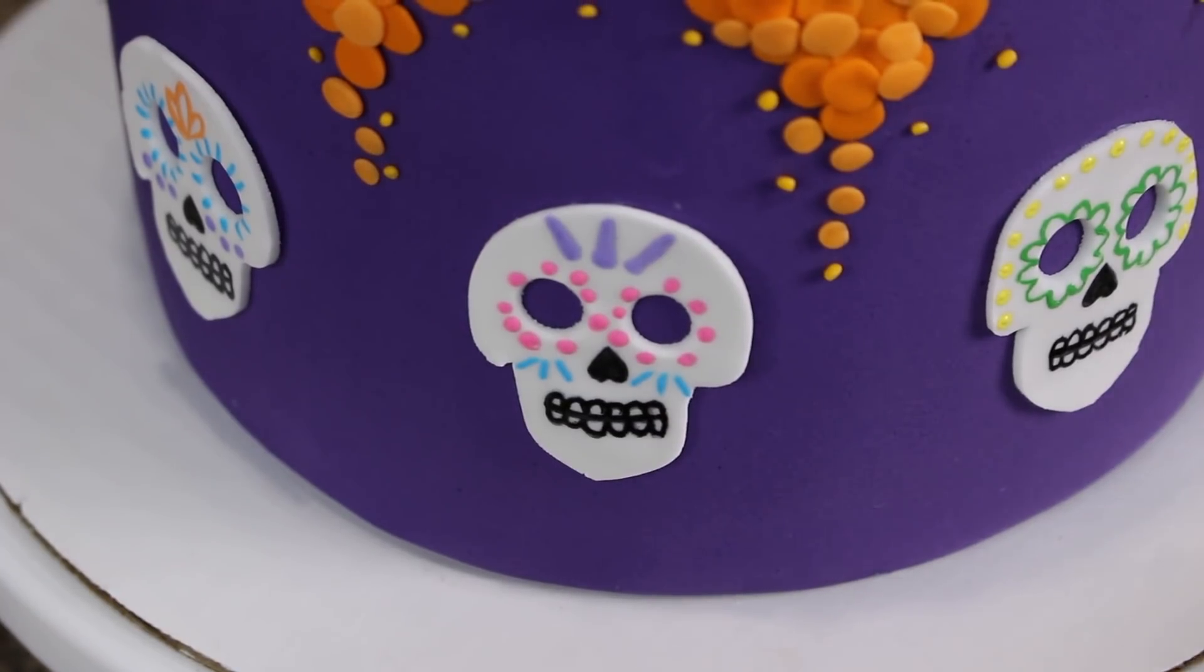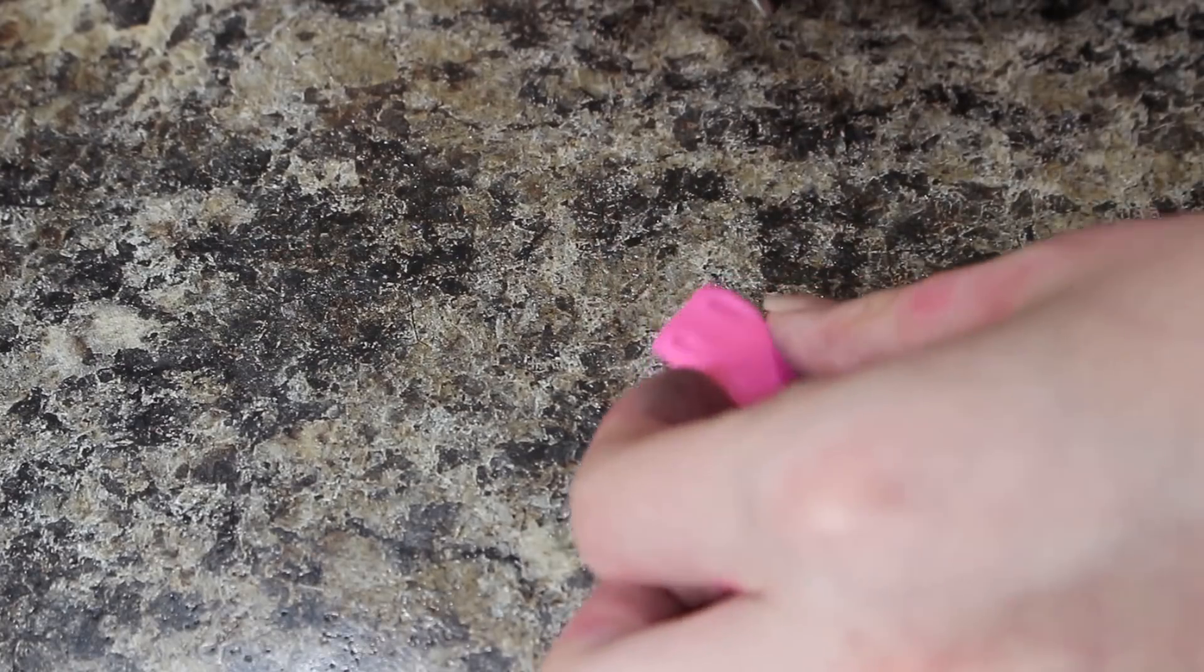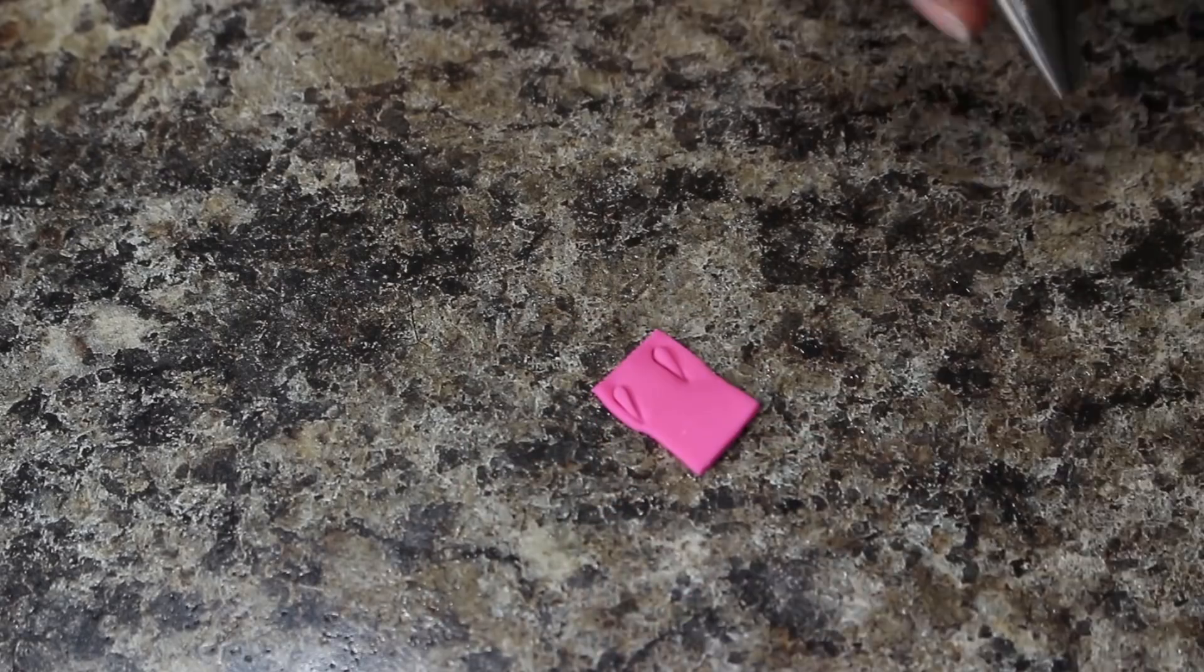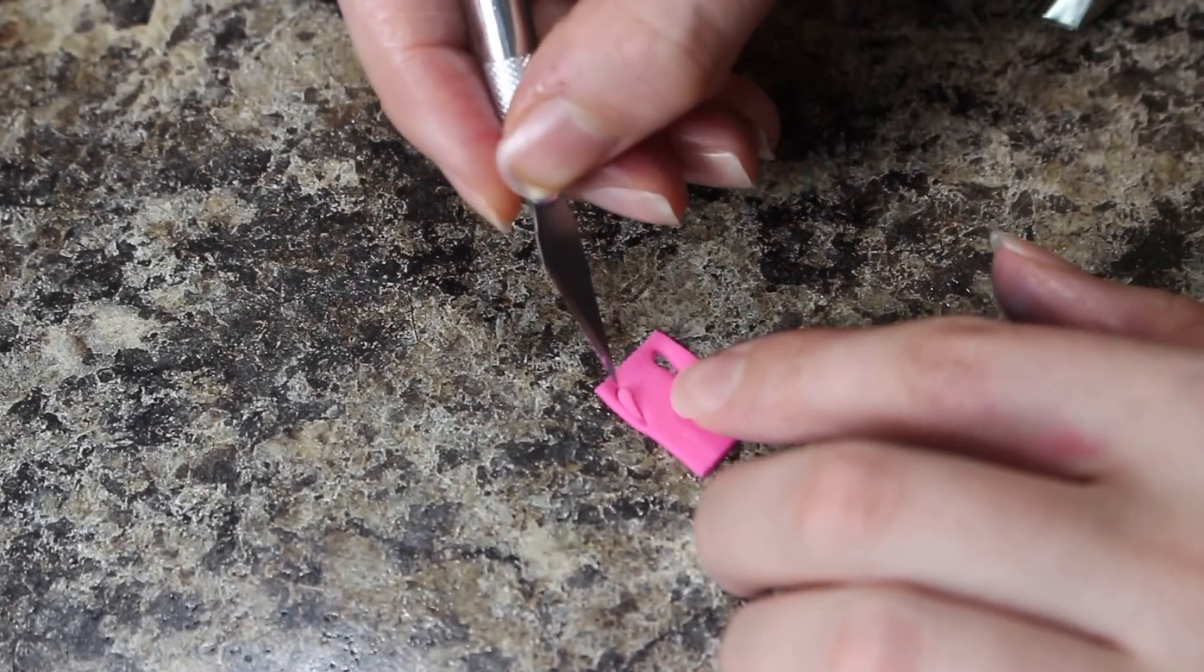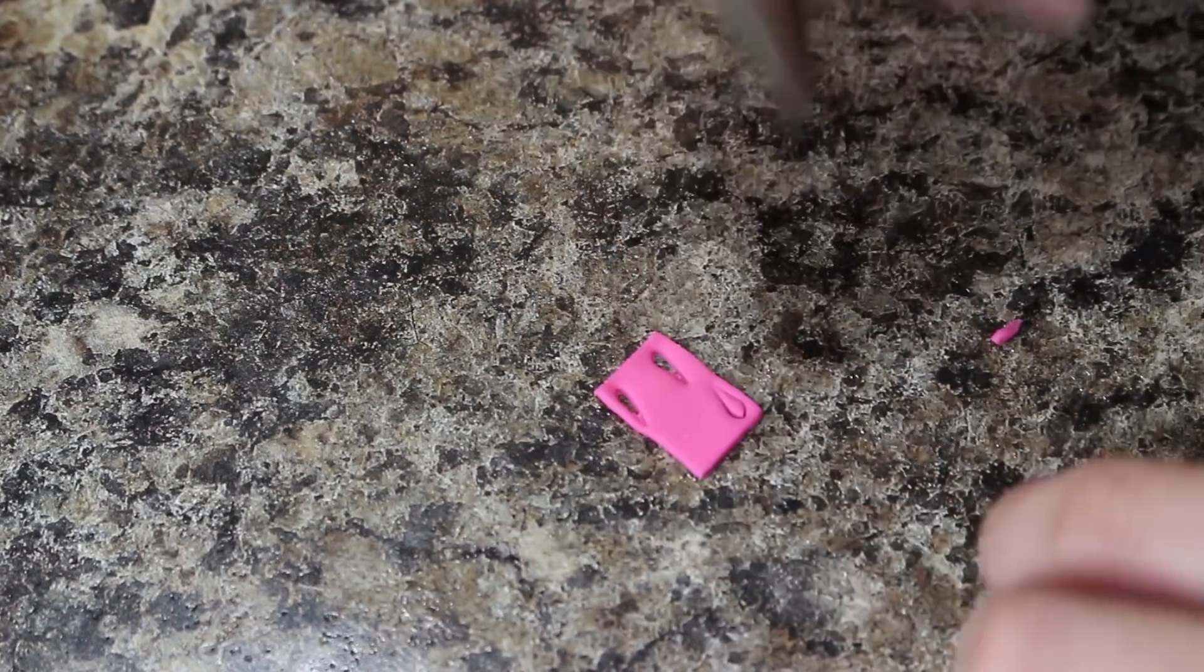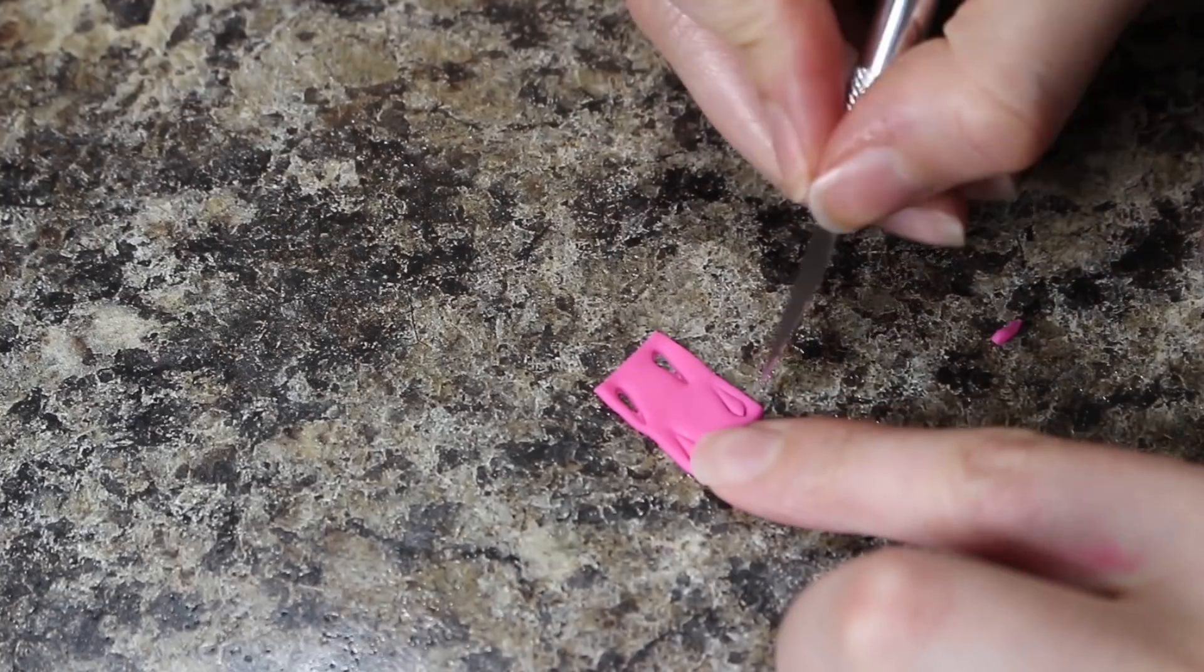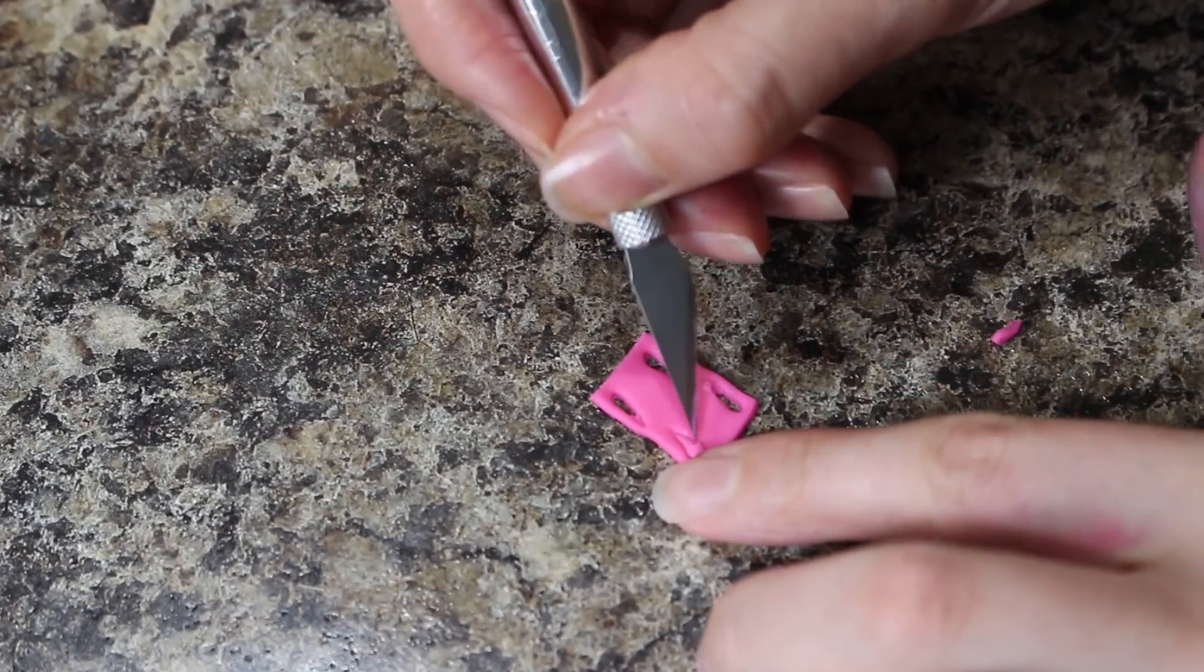I really loved the banners that they used in Coco to tell the story in the beginning. They were so beautiful so I wanted to add those to my cake. I rolled out all these different colors and cut little squares out of them. The banners in the movie are so intricate and of course they tell the story but because that was a little hard to recreate all I did was use different piping tips and just punched out different shapes in each piece.